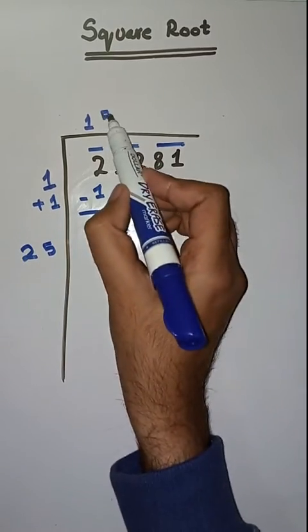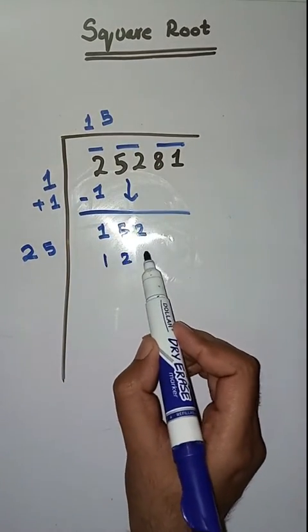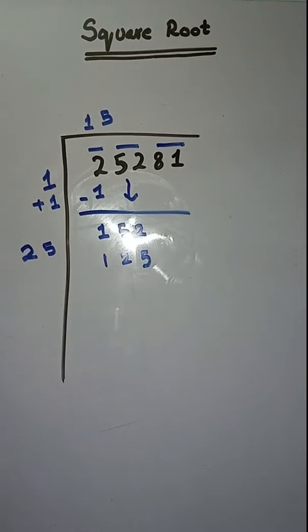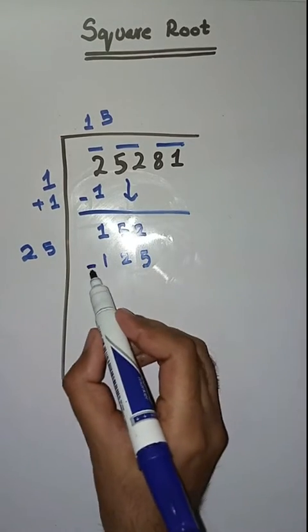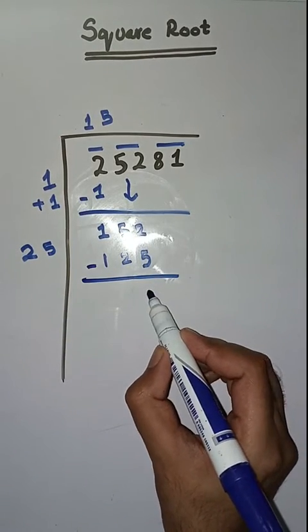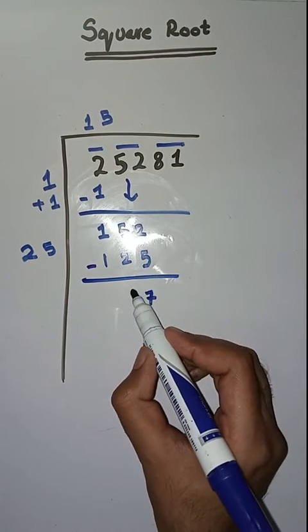5 times 25 is 125. Minus, we will get 12 minus 5 is equal to 7, and 4 minus 2 is equal to 2.